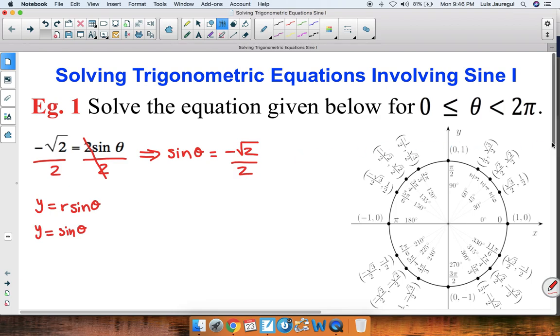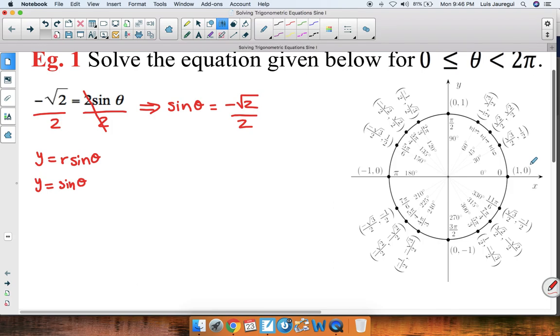So let's take a look at our unit circle. Now looking at the y coordinates, one can see that this particular point has a y coordinate of negative square root of 2 over 2, and also this particular point has a y coordinate of negative square root of 2 over 2.